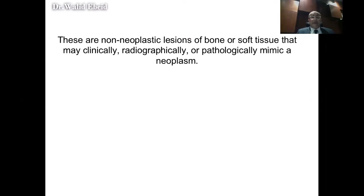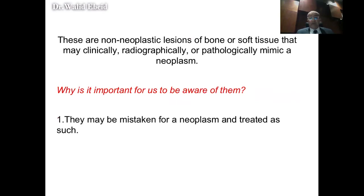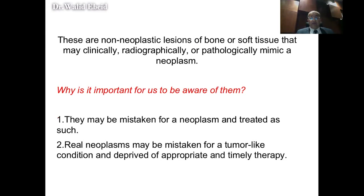The definition is as follows: they are non-neoplastic lesions of bone and soft tissues that may clinically, radiographically, or pathologically mimic a neoplasm. Why is it important for us to be aware of them? For two reasons: they could be mistaken for a neoplasm and treated as a tumor, or vice versa — a real neoplasm may be mistaken for a tumor-like condition and deprived of the appropriate and timely therapy.